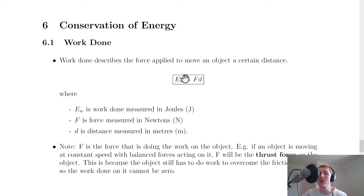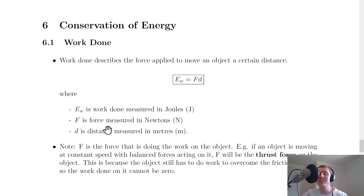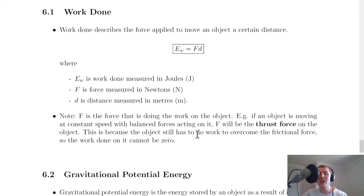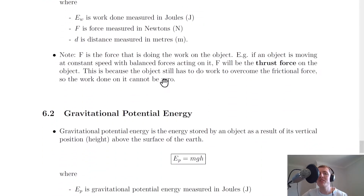The equation for work done, which you should remember from National 5, is: Ew = Fd, where Ew is work done measured in joules, F is the force measured in newtons, and d is the distance measured in metres.